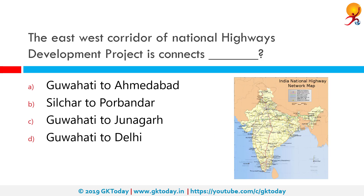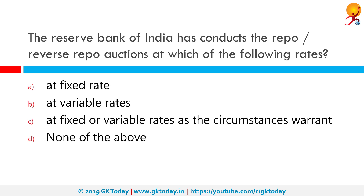The east-west corridor of the National Highways Development Project connects which cities? The correct answer is Silchar to Porbandar. It first began as the National Highways Development Project to upgrade, rehabilitate, and widen major highways in India to higher standards. The project was started in 1998 under the leadership of then Prime Minister Atal Bihari Vajpayee.